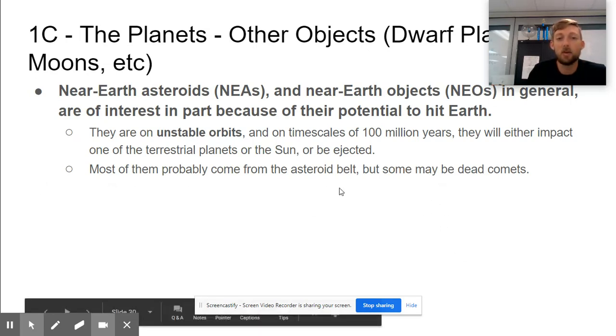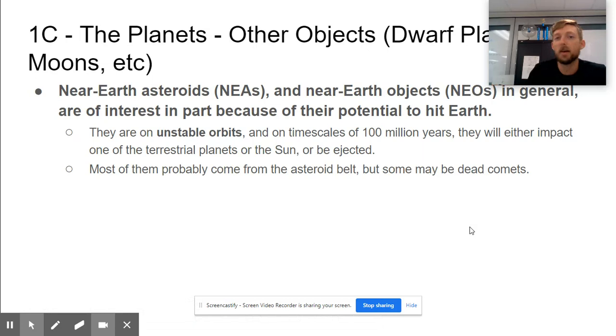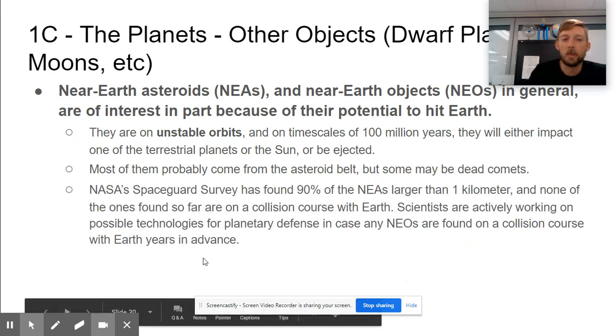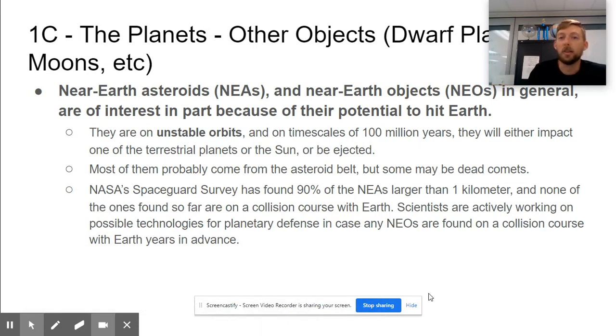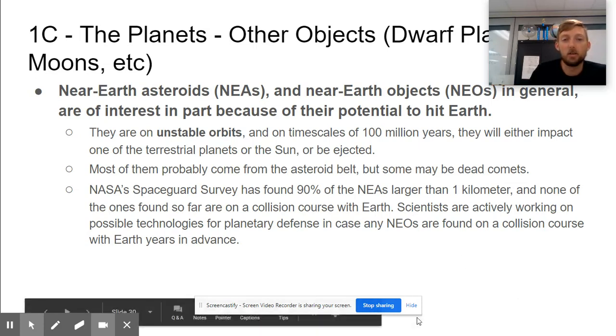Most of them probably came from the asteroid belt, but some may be dead comets. Again, comets are big chunks of ice that usually fly into and out of our solar system. But if they're dead, they're not moving on that same projection anymore and have been either caught or impacted or are now sitting as what we presume to be asteroids near us.